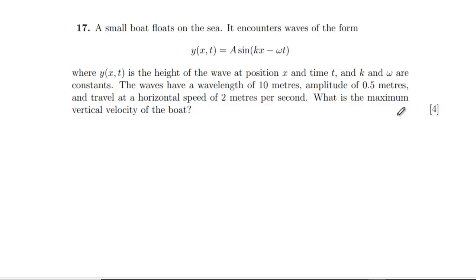All right, I'm back again with the next part of the Oxford PAP from 2015. So we've got question 17 we're on to now. A small boat floats on the sea. It encounters waves of this format where Y as a function of X and T is the height of the wave at position X and time T. K and omega are constants. The waves have a wavelength of 10 metres, amplitude 0.5 metres, travel at a horizontal speed of 2 metres per second. What's the maximum vertical velocity of the boat?